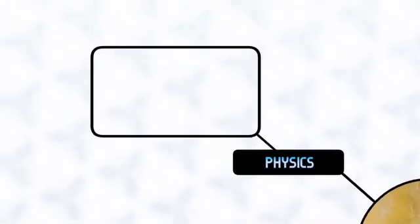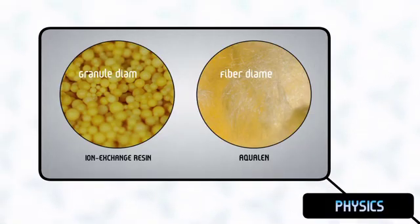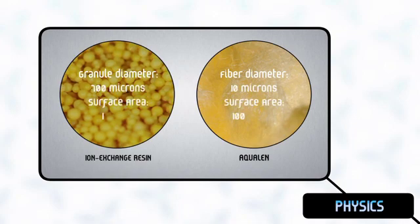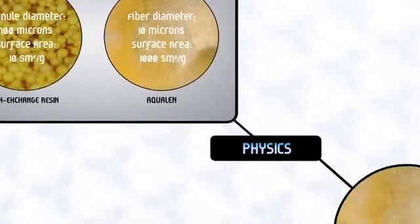Aqualem has a considerably larger outer surface compared to traditional absorbents, due to the unique shape of the material. This results in a higher rate of removing impurities from the water.